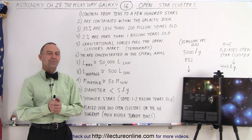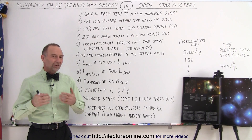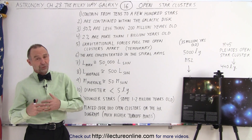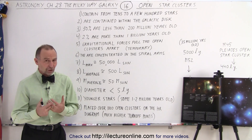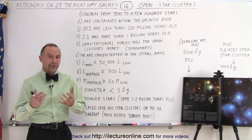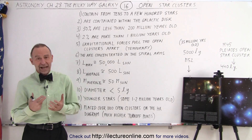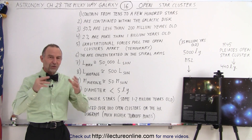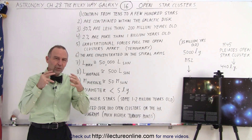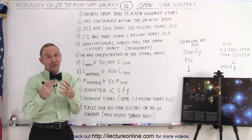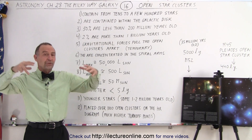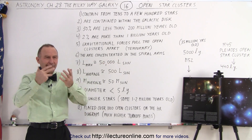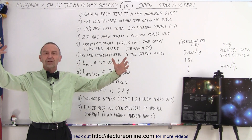Welcome to iLecter Online. There's another type of cluster called the open star cluster, as opposed to the globular star cluster. The difference is that they're different in every respect, but the main difference is that the stars are not nearly as tightly close together as they are in the globular cluster. They're much farther apart, so when you look at them they appear as an open cluster.